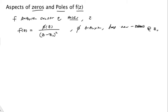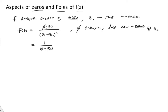So if z-naught is a pole of m-th order, then we can always express this function by factorizing — we can have a factor sitting out front. We can always factor things in this way. It turns out zeros work similarly.